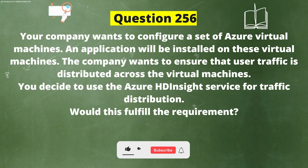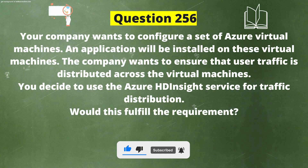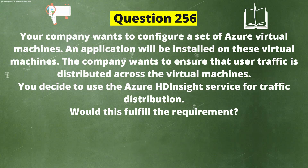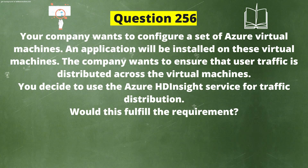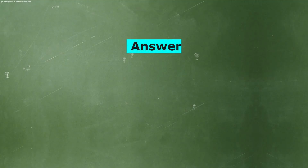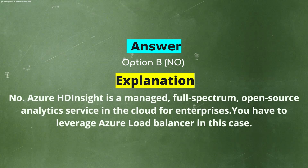Next question. A company wants to configure a set of Azure virtual machines, and an application will be installed on these virtual machines. The company wants to ensure that user traffic is distributed across the virtual machines. You decide to use the Azure HD Insight service for traffic distribution. Would this fulfill the requirement? Option A: Yes. Option B: No. The correct answer is Option B, No. Explanation. Azure HD Insight is a managed full-spectrum open source analytics service in the cloud for enterprises. You have to leverage Azure Load Balancer in this case.